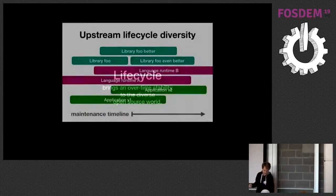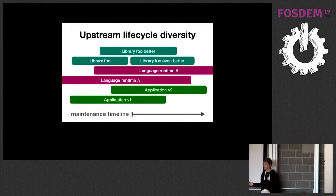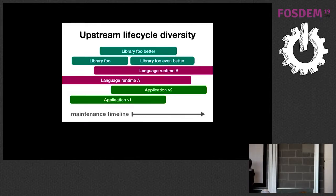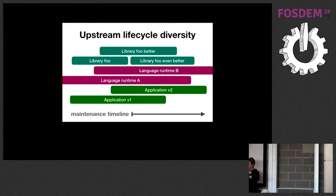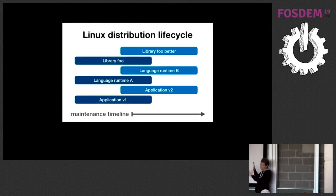Life cycles bring stability to the diverse open source world. Different open source projects have very different maintenance timelines — a version appears, then another, and old ones die with no one maintaining them. If you run something in production and need to make sense of all that, it's crazy.